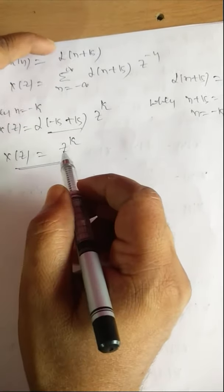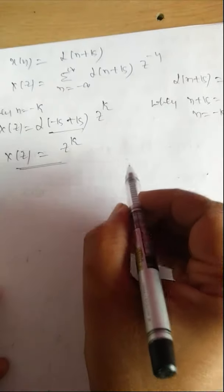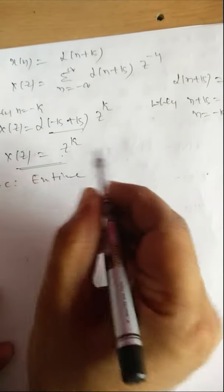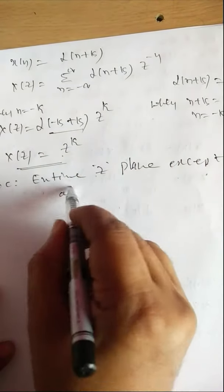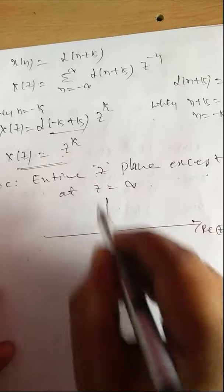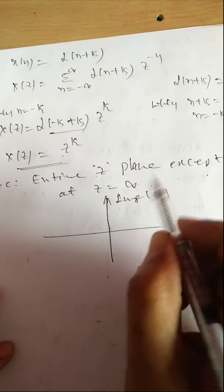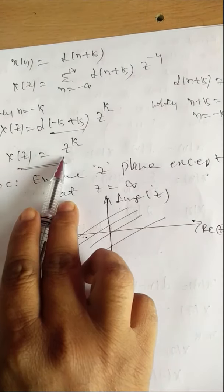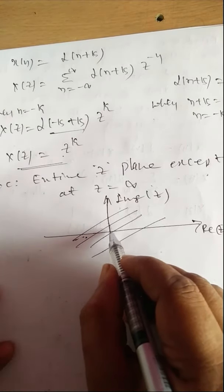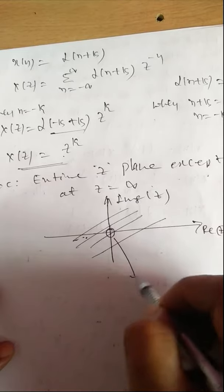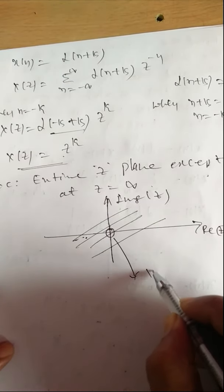This is the Z-transform of δ(n+k), and it has only a numerator here. Its ROC is the entire Z-plane except at Z = infinity. Plotting the ROC on the real and imaginary Z-plane axes: ROC is the entire Z-plane except at Z = ∞. It does not have any poles. It has k number of zeros, marked at the origin — k number of zeros at Z = 0.